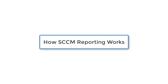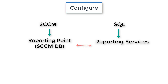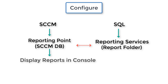So how does SCCM reporting work? You have to configure SCCM and SQL Server, which we will look at in this video. After configuring SQL Server Reporting Services, it connects to the SCCM database to copy any reports to a specific report folder. Once that data is available in the report folder, you can run specific reports in the SCCM console. It connects to SQL Server Reporting Services to retrieve the report information and displays it in the SCCM console.